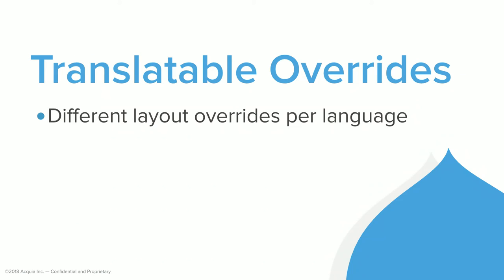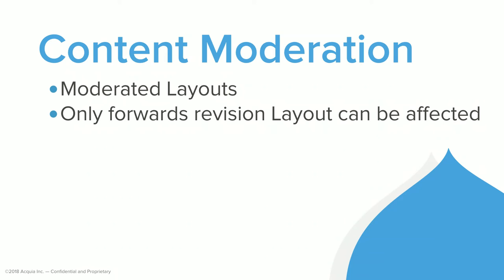The stuff we're still working on - and anybody is welcome to help with - includes translatable overrides, so each translation could have its own layout. Content moderation is the other thing: basically if you use content moderation, you do a forward revision so you can go through an editorial process and say 'okay, it's now approved.' You'll be able to do that with layouts too - you can edit the layout but don't want it to affect the site right now, have the designer do it, and then the content owner can review and approve it. Translations and content moderation share one problem we're still figuring out, but once we solve it, it should work for both cases.